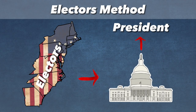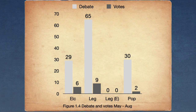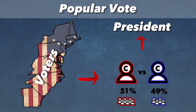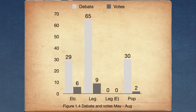The second most prominent appointment method was the electors method with 29 debate mentions, 6 votes, and was also briefly passed by the convention as the method to select the president. The popular vote comes in third place with 30 debate mentions and 2 votes. It never passed as a method to select the president.